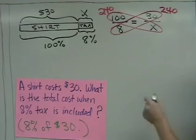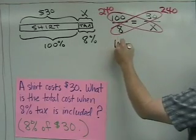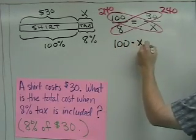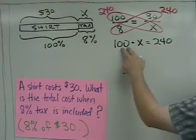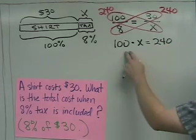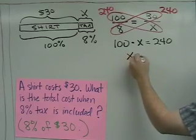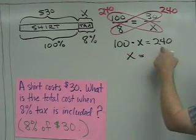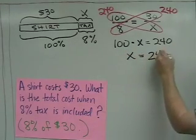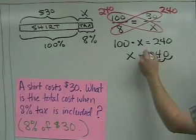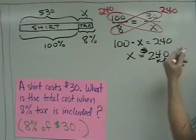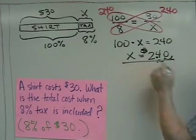So now, 100 times something has to equal 240. Well, we know about dividing by 100. The way we'd solve this is divide by 100. When you divide by 100, all you do is you move the decimal over two places. So the decimal used to be here, moves over. So now we know that the tax is $2.40.